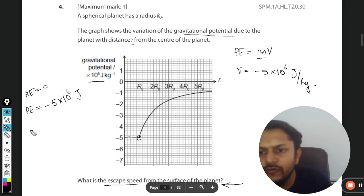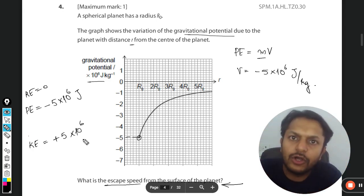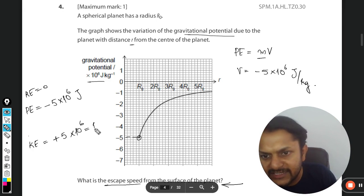So you will say that we have to give additional kinetic energy which will be 5 × 10^6. This much of the energy will be given to the rocket so that the total energy becomes zero. Now this is equal to half mv square.